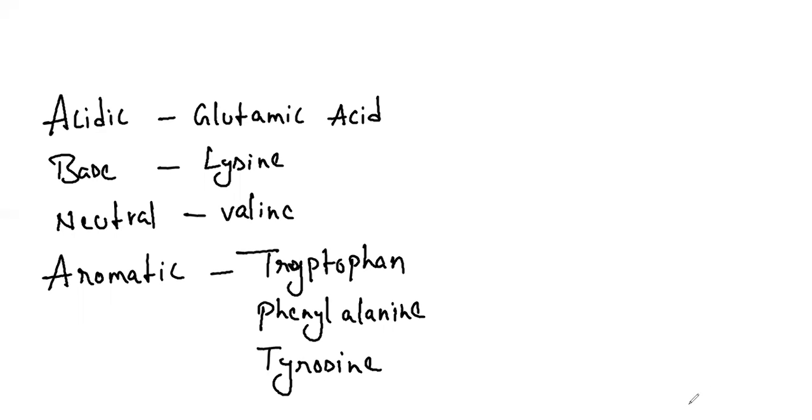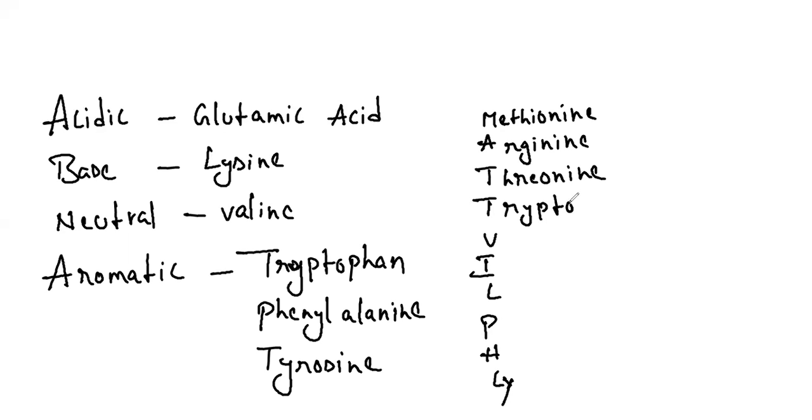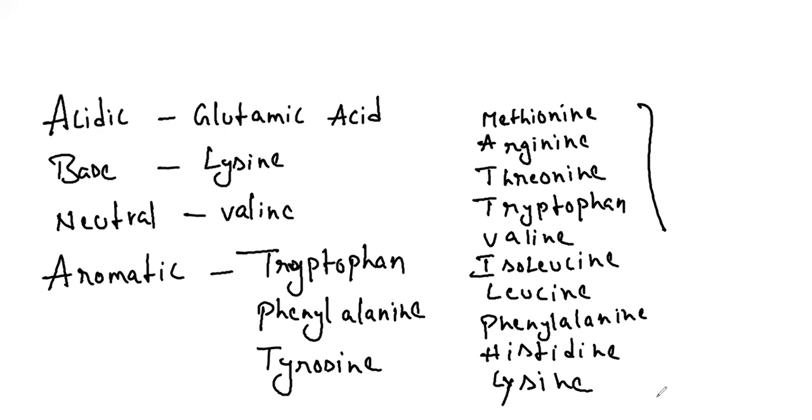And let's see some of the very important essential amino acids as well. For this, just remember the mnemonic: MATT WILL FLY. Methionine, arginine, threonine, tryptophan which is aromatic, valine, isoleucine, leucine, phenylalanine, histidine, and lysine. These are the 10 essential amino acids.